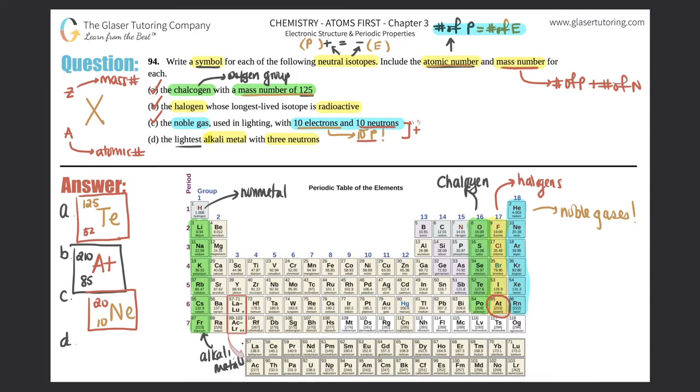They want the lightest one. The lightest one would have the least amount of mass, and the higher up you go on the periodic table, you get lighter and lighter. Lithium is 6.94 mass number, then 22.99, 39.10. As you can see, lithium would be the lightest alkali metal, so I know that that's the symbol here.